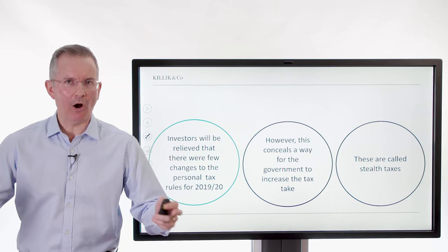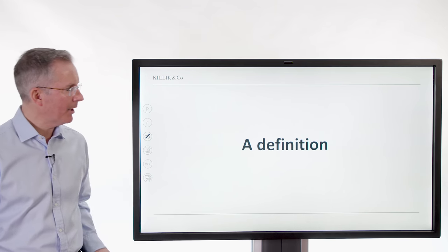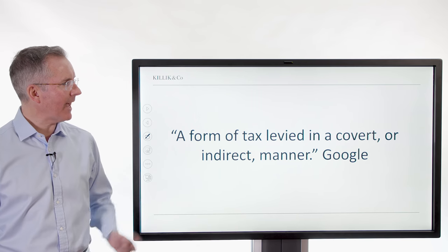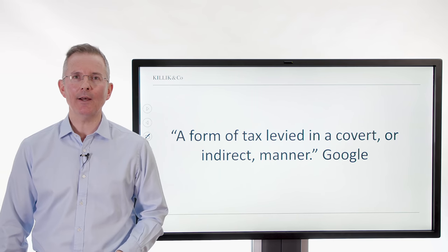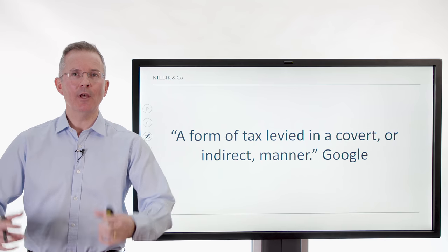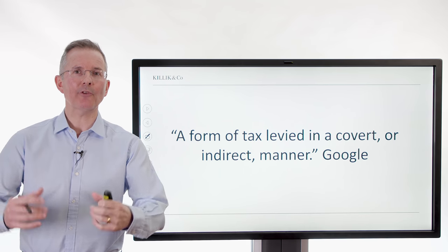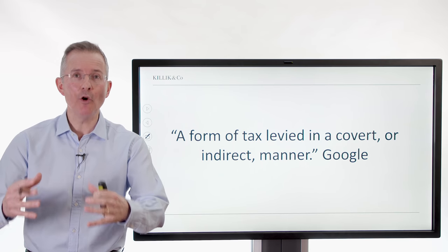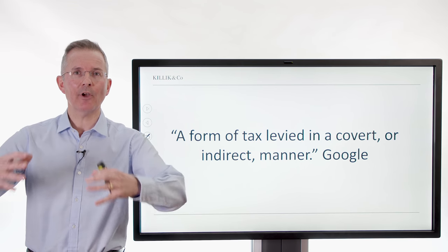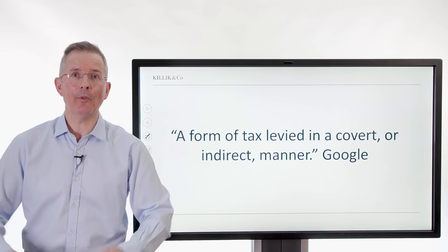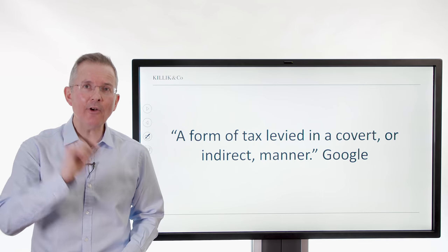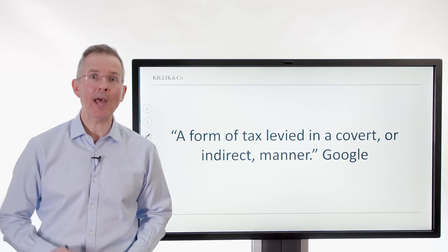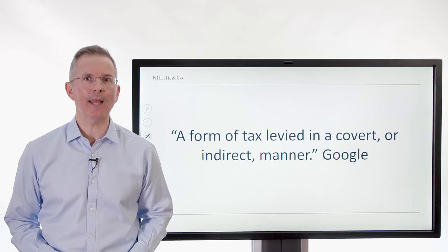Definitions you can argue about, but here's one from Google: a form of tax levied in a covert or indirect manner. The publicised changes that come with autumn statements, spring statements and so on to tax rates and thresholds — they're not covert or sneaky, they're publicised. Everyone knows about them. Stealth taxes are other ways for the government to sneakily raise tax without telling anyone, or reminding them, let's say.